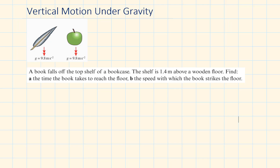Let's look at some examples from the Edexcel A-level textbook. A book falls off the top shelf of a bookcase. The shelf is 1.4 metres above a wooden floor. Find the time the book takes to reach the floor and the speed with which the book strikes the floor. We will model the book as a particle, writing out all the letters found in the constant acceleration formulae — S, U, V, A, T — hence they are called the SUVAT formulae.